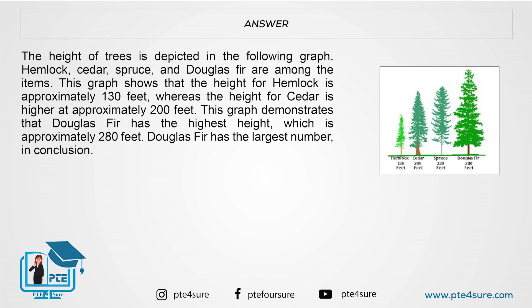This graph shows that the height for hemlock is approximately 130 feet, whereas the height for cedar is higher at approximately 200 feet. This graph demonstrates that Douglas fir has the highest height, which is approximately 280 feet. Douglas fir has the largest number, in conclusion.